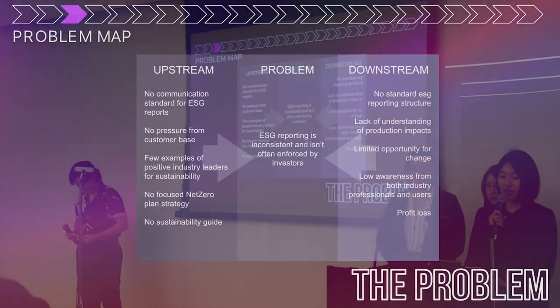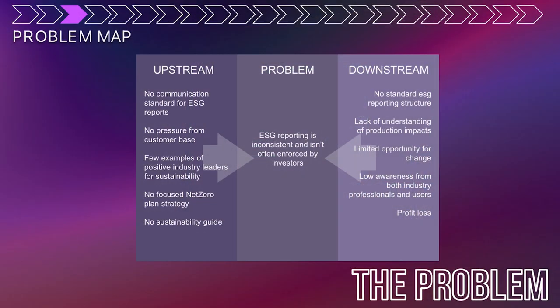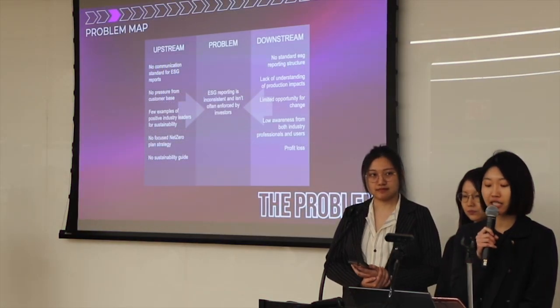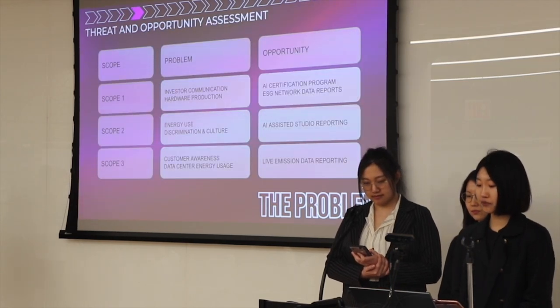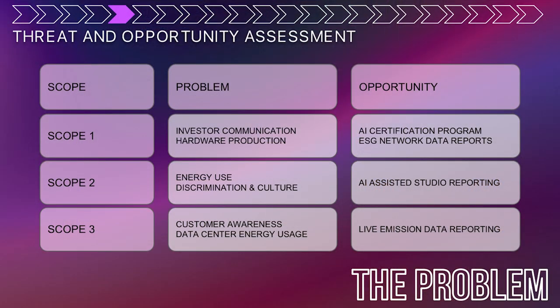So the problem: this map highlights the issue of ESG reporting in the industry, which is caused by a need for more communication and regulation between producer and investor. As a result, relevant data is not reported and both parties lack alignment in expectations and processes. We started by laying out the problems we saw in the video game industry regarding sustainability risk and climate impact, separated by scope. Then we did research on opportunities that directly correlated to those problems to see where we could maximize our impact.